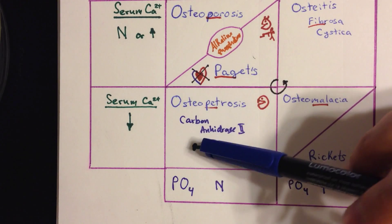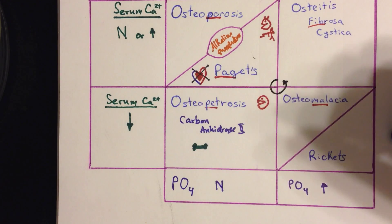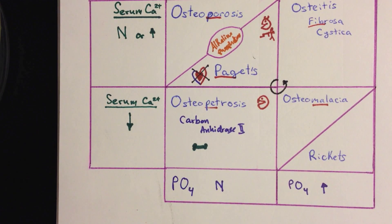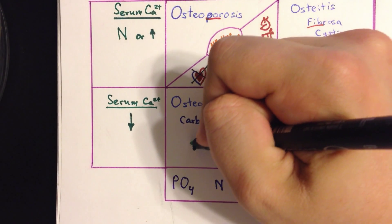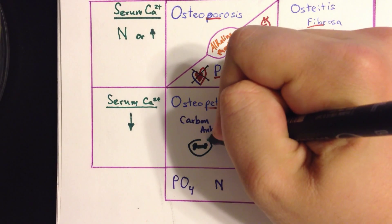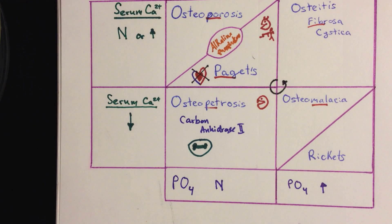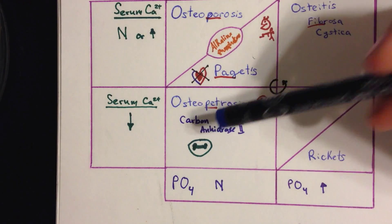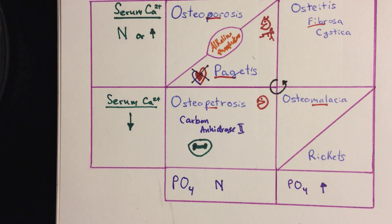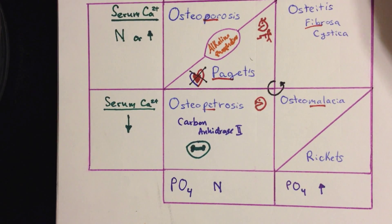There's a green bone graphic here to remind you that osteopetrosis is treated with a bone marrow transplant. Why? Because osteoclasts are derivatives of macrophages, which come from the myeloid line. In theory, if you give the person a new bone marrow, they can make healthy osteoclasts.